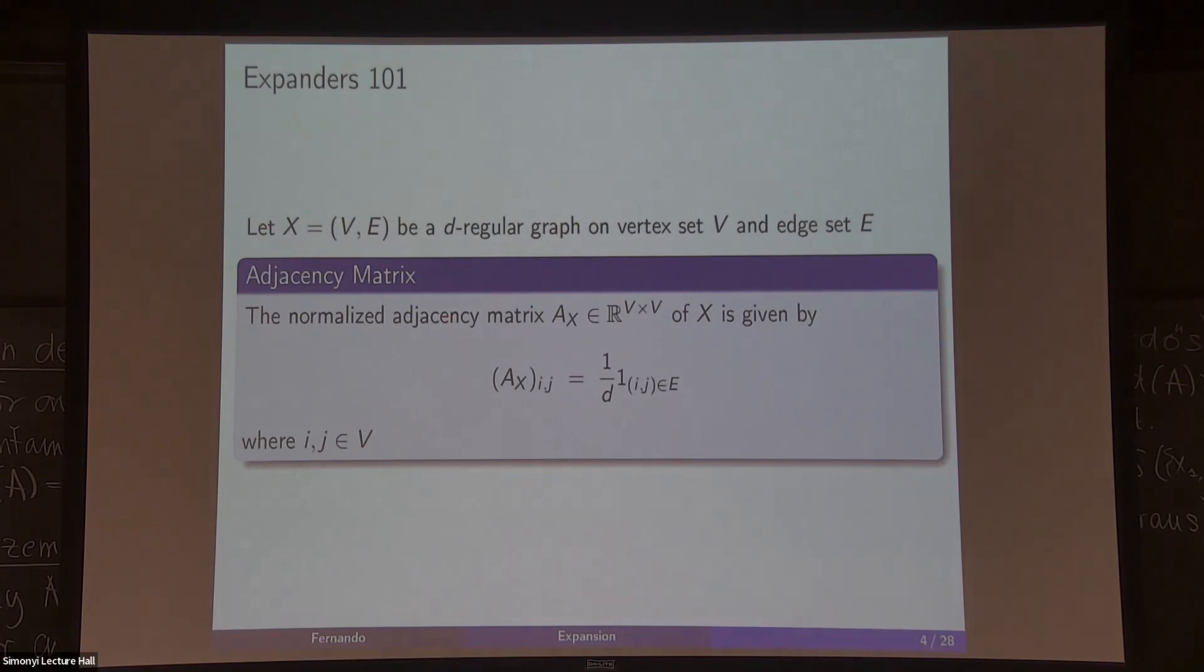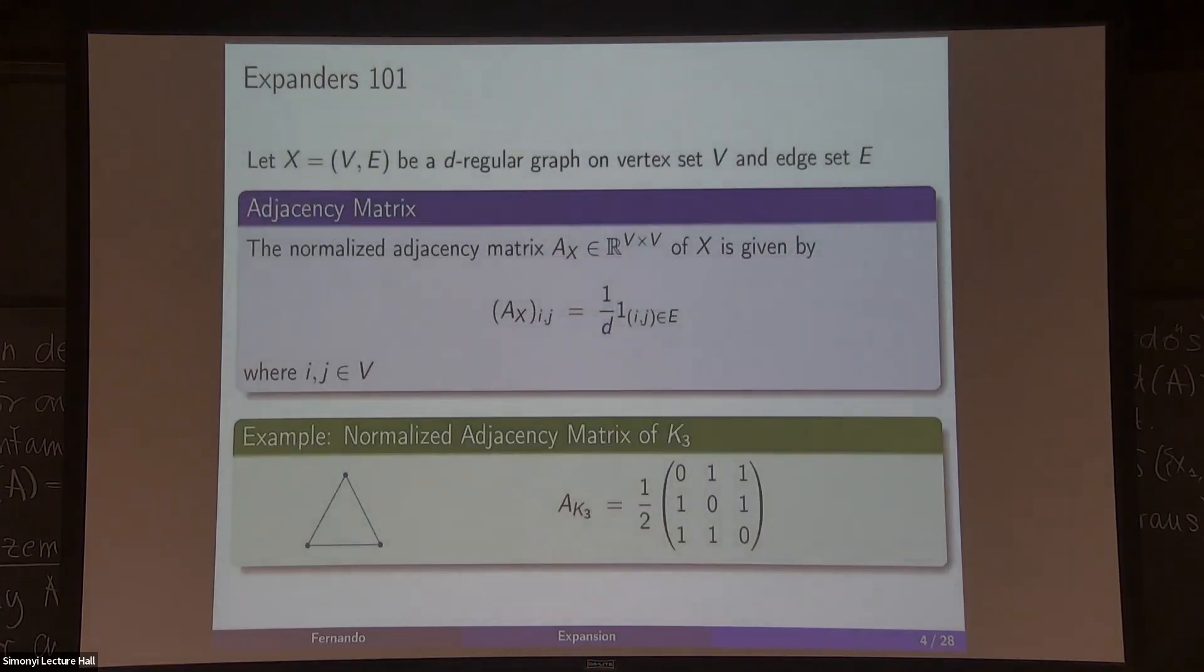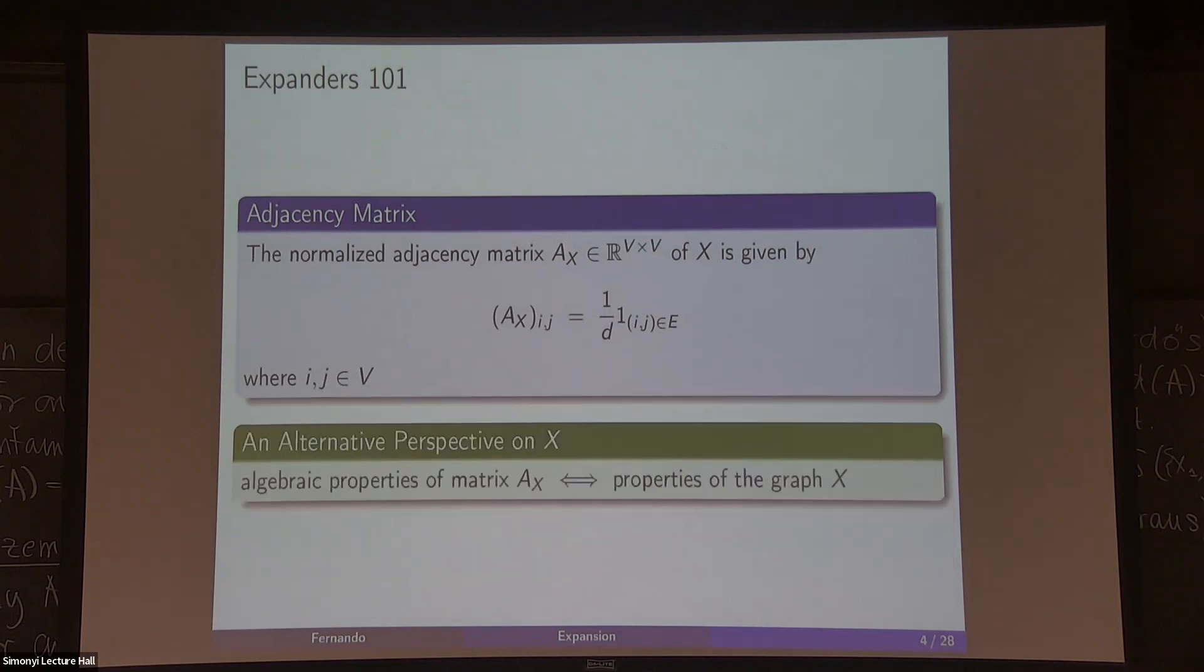To give an example, here we have this very simple graph, a triangle. The normalized adjacency matrix will look something like this: everyone is connected except that the vertex with itself, and you have the degree two, so we have this normalization of one over two. That's a very simple example, and algebraic properties of this matrix will tell us properties of the graph, and vice versa, so it's a very useful representation for us.